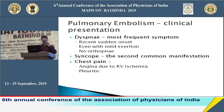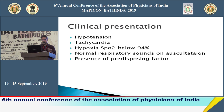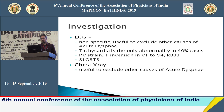ECG is non-specific in pulmonary embolism. The classic S1Q3T3 pattern is seen in less than 20 to 30 percent of patients. Sinus tachycardia is the most common finding, seen in 40 percent. Evidence of RV strain with T-wave inversion in V1 to V4 can sometimes be found. ECG is mainly useful for ruling out other causes of dyspnea such as ACS.